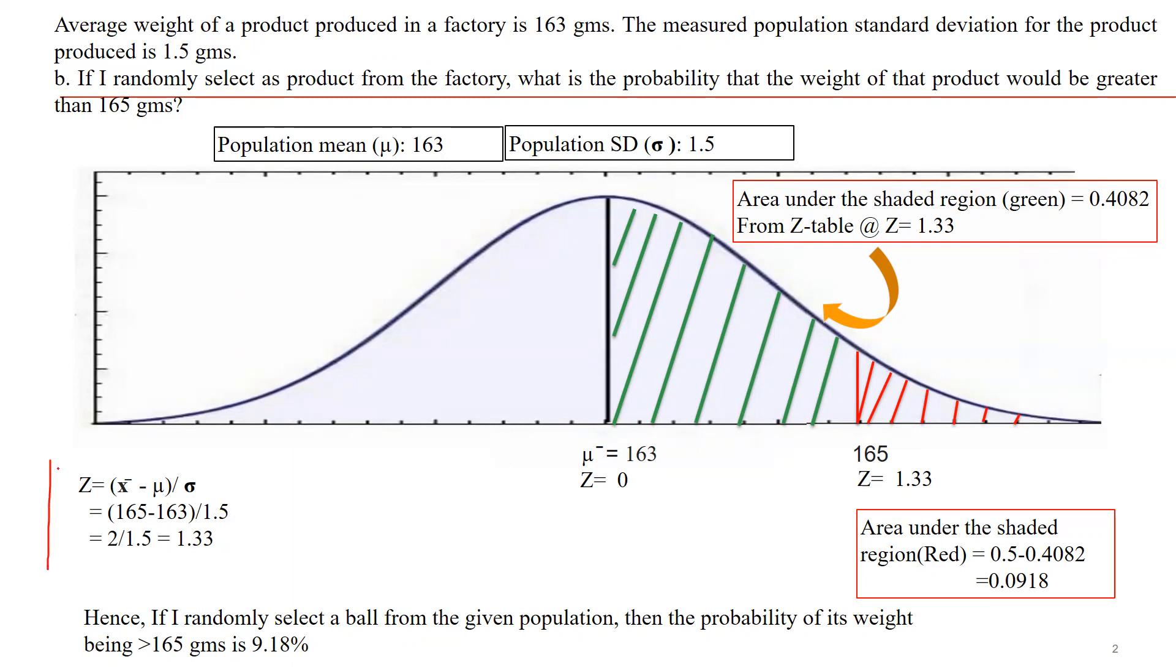We already know the z value we had calculated with the help of these values: 163 grams, 1.5 grams, and 165 grams. You can see the z value and the table. First of all, we will find out what is the critical value with the help of the table. The critical value is 0.4082, that is our table value from the z-table at z equal to 1.33.